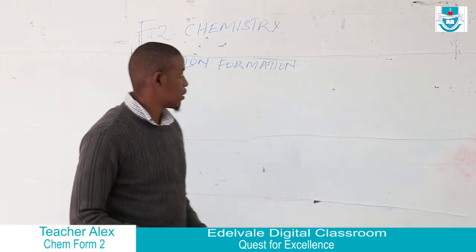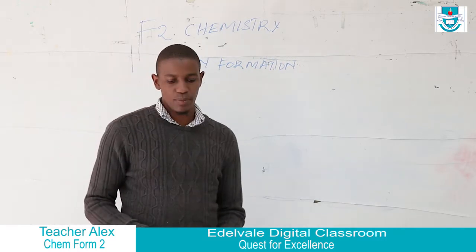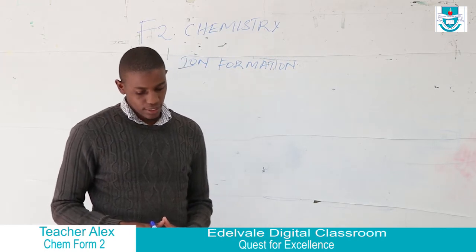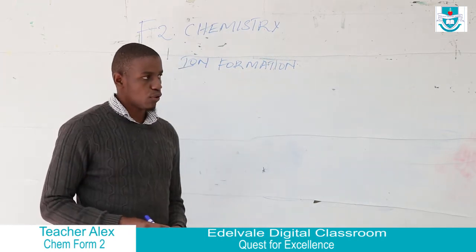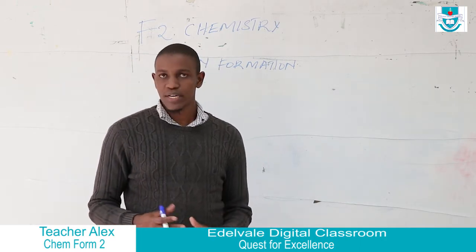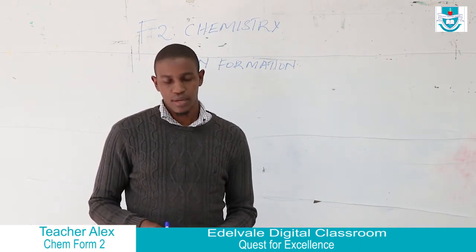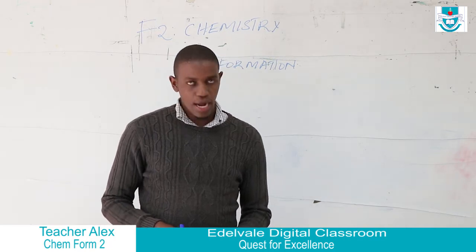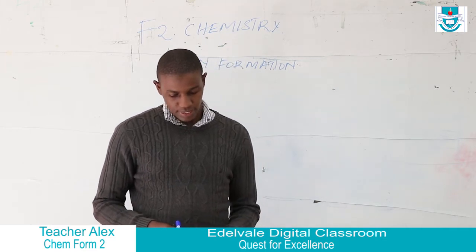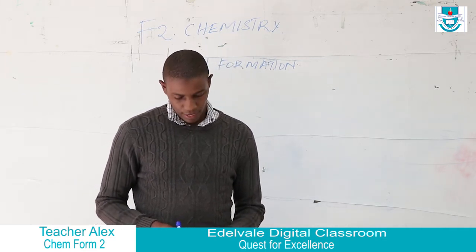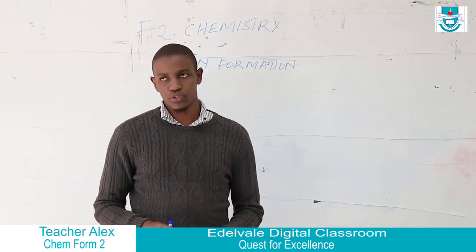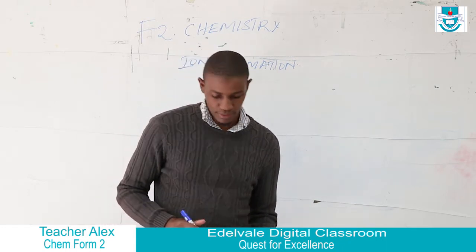Today we are going to learn about ion formation in chemistry. The basic things to encounter in this topic are the definition of an ion, what is an ion, how do metals form ions, how do non-metals form ions, the definition of valency, and also writing chemical formulas.